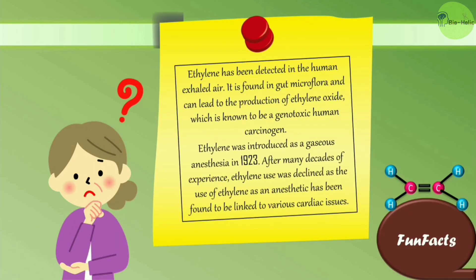Some fun facts about ethylene: ethylene has been detected in human exhaled air. It is found in gut microflora and can lead to production of ethylene oxide, which is known to be a genotoxic human carcinogen. Ethylene was introduced as a gaseous anesthetic in 1923, but after many decades of use, it was declined as it was found to be linked to various cardiac issues.